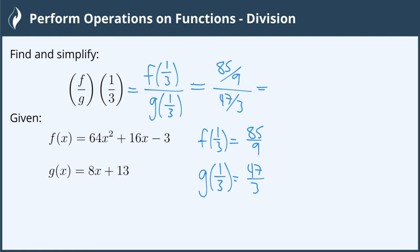When you have one fraction that is dividing another, what you're really doing is keeping the first fraction, changing to multiplication, and flipping the second fraction. So it was 47 over 3, now it's 3 over 47.